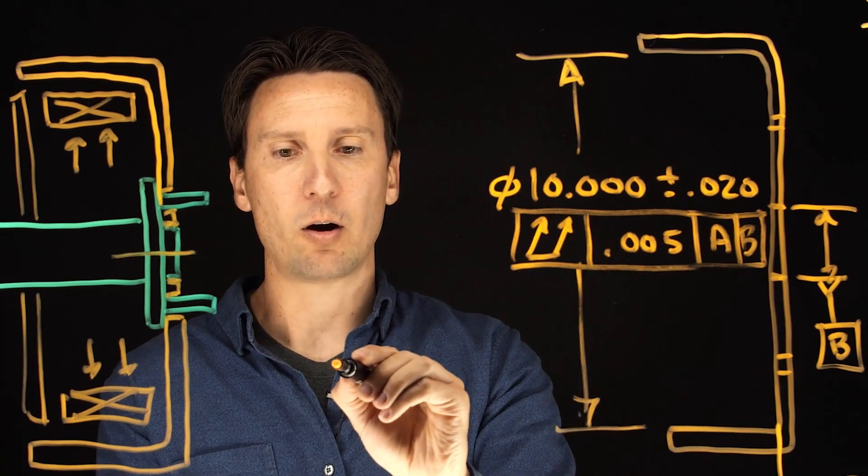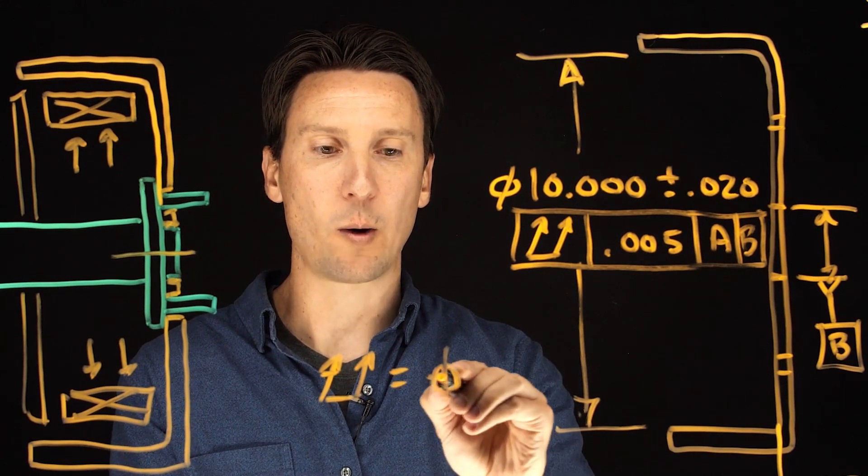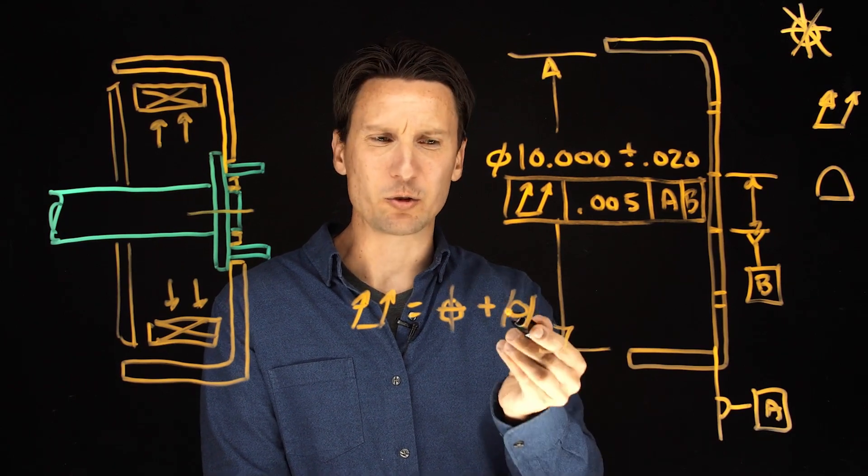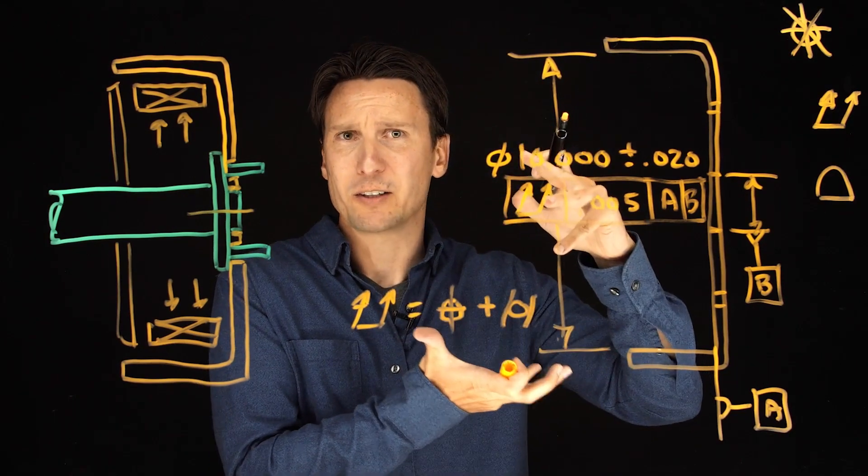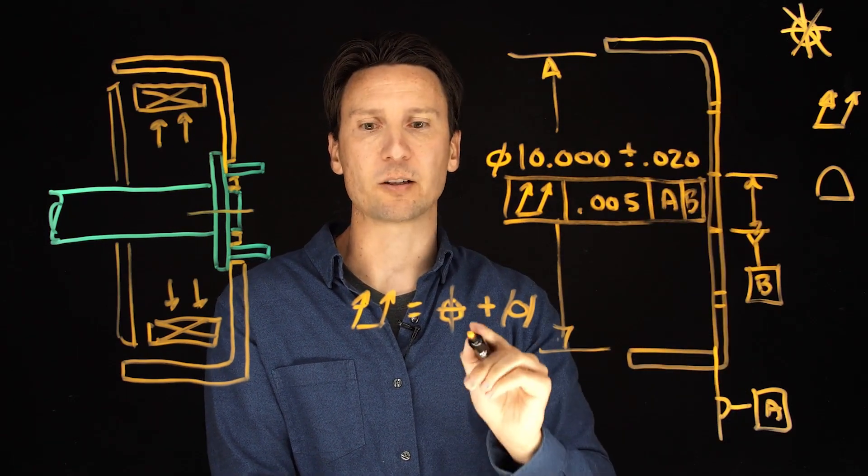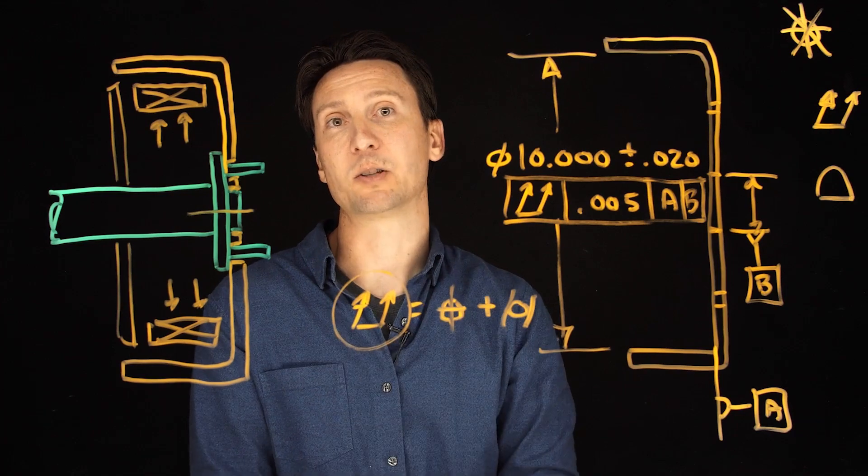And remember that runout, all that is, is it's just controlling the position, the coaxiality, plus the cylindricity. Do you see how you don't really need cylindricity? Because you just don't want it to be a perfect cylinder and that's it. You want it to be cylindrical and centered on your datum axis. So that's why your upgrade to a total runout would get both of those jobs done at the same time.